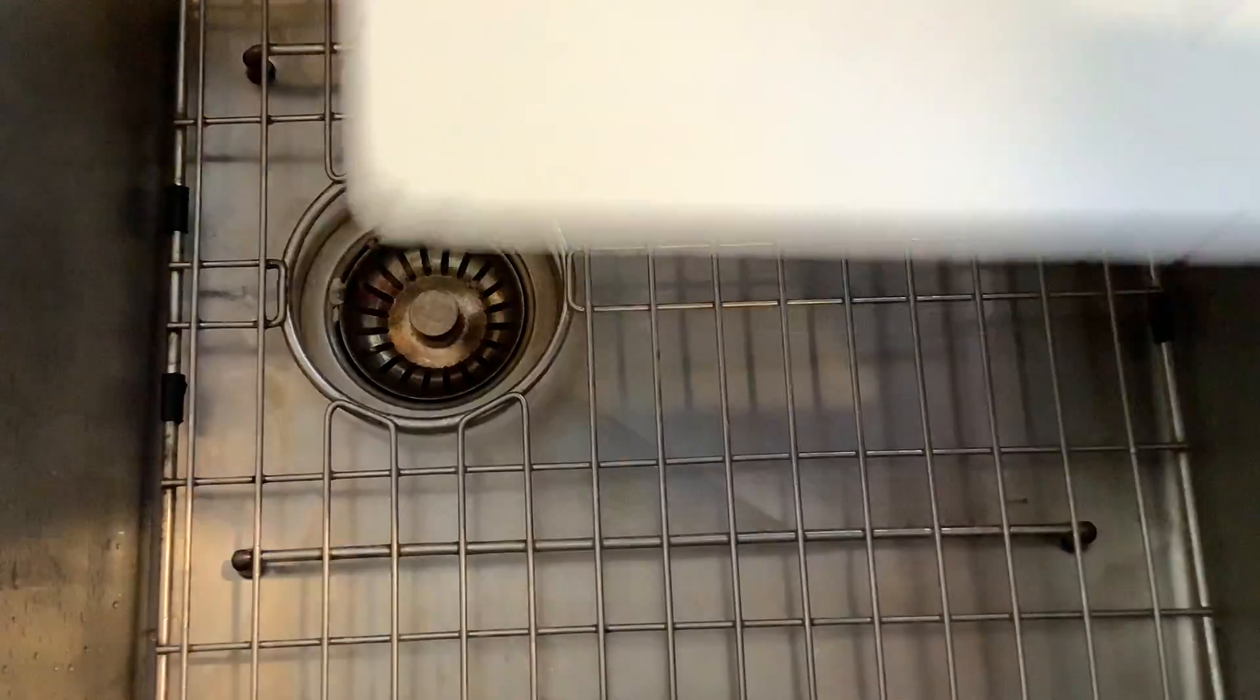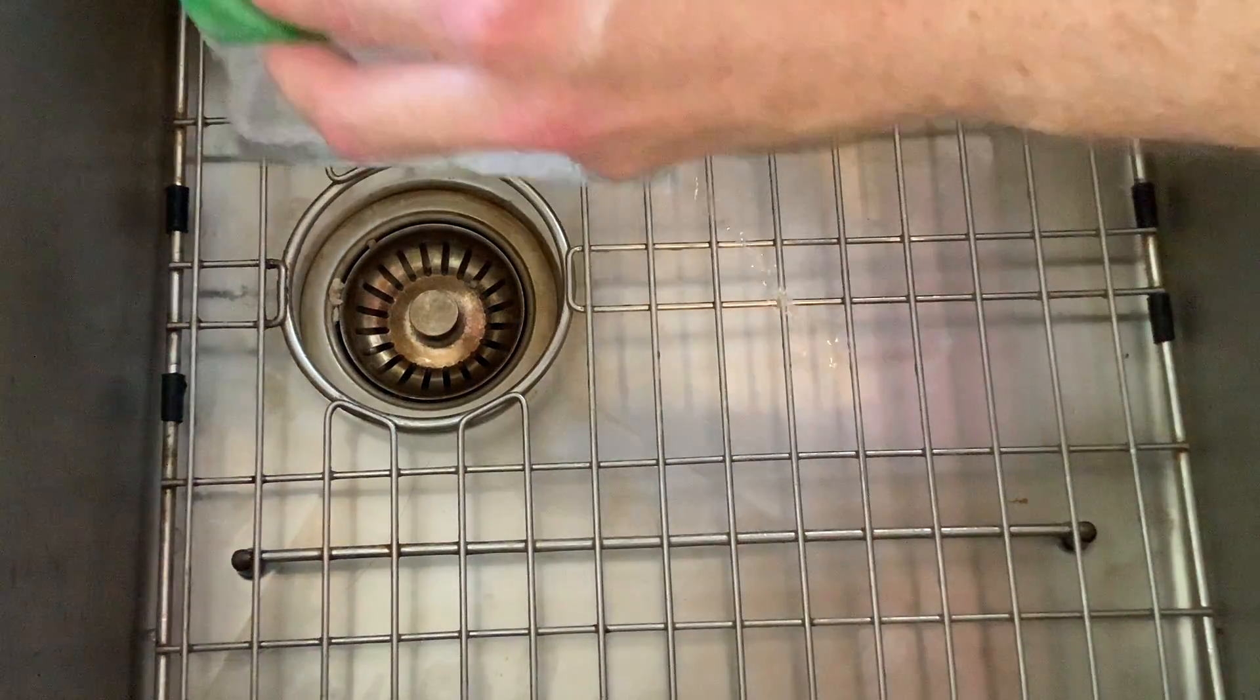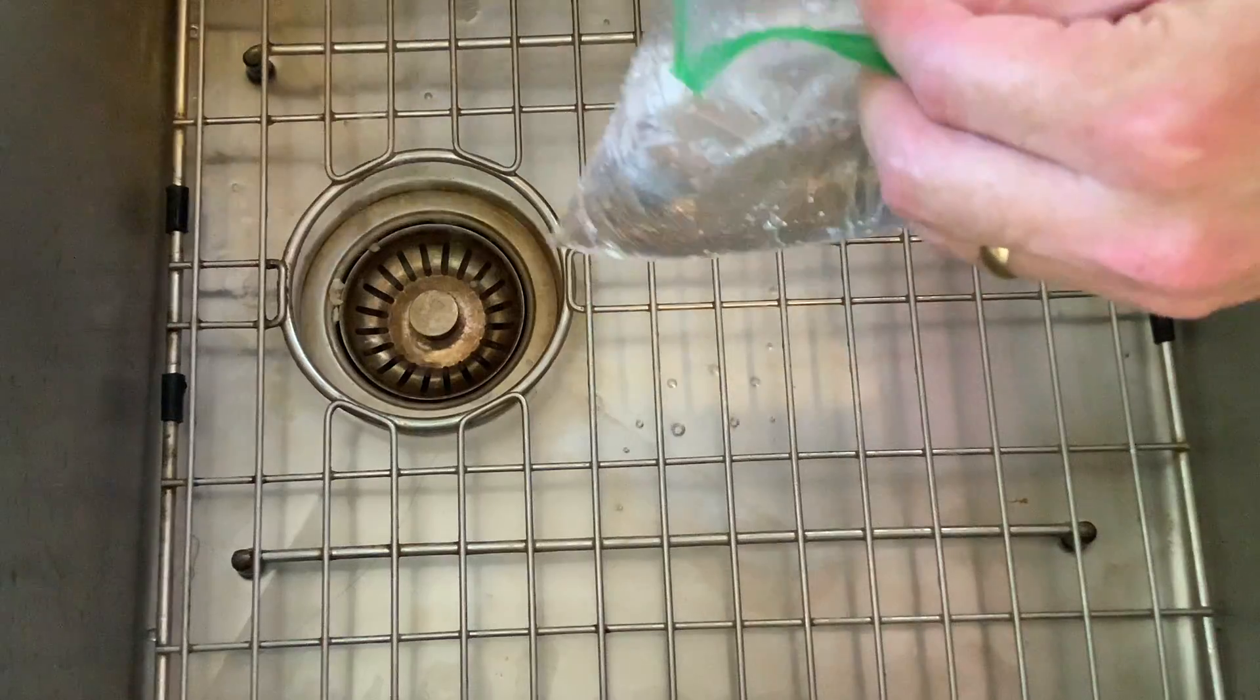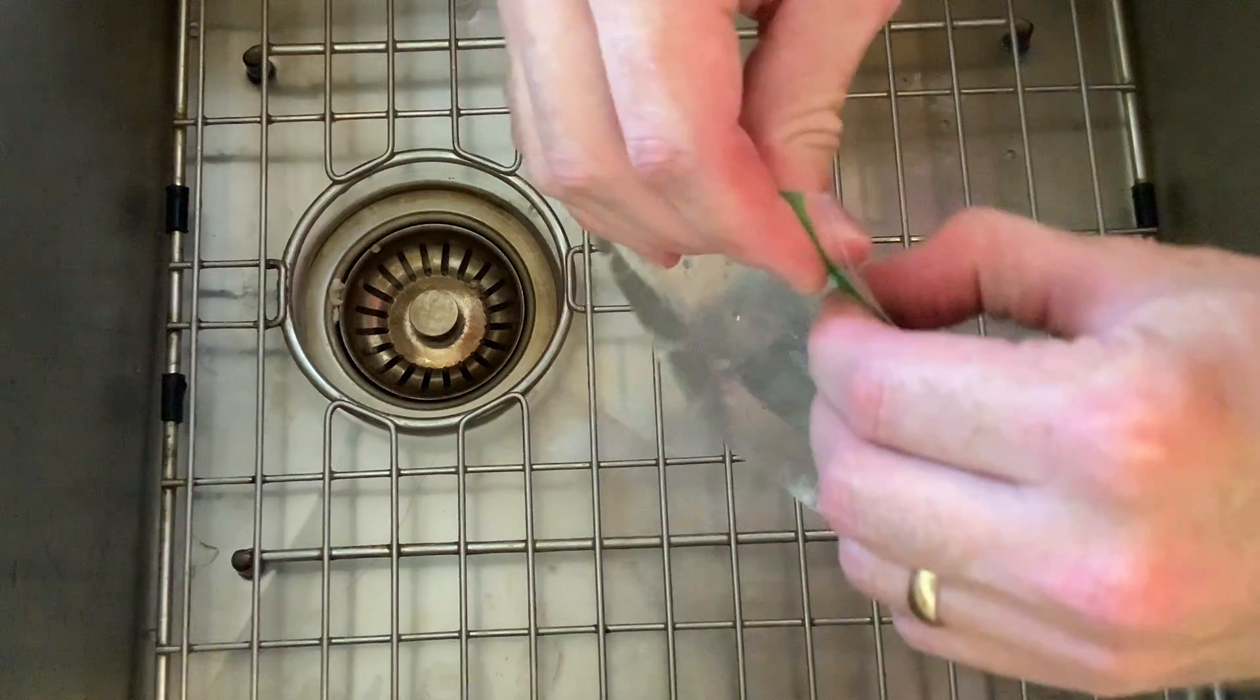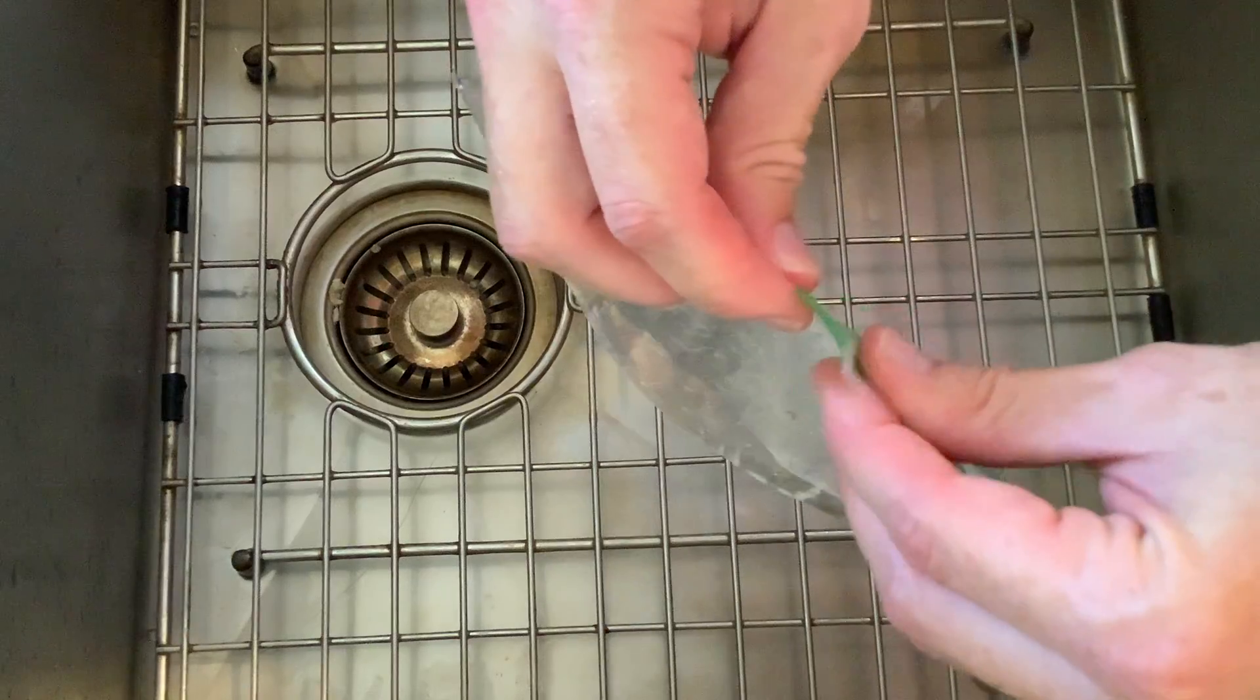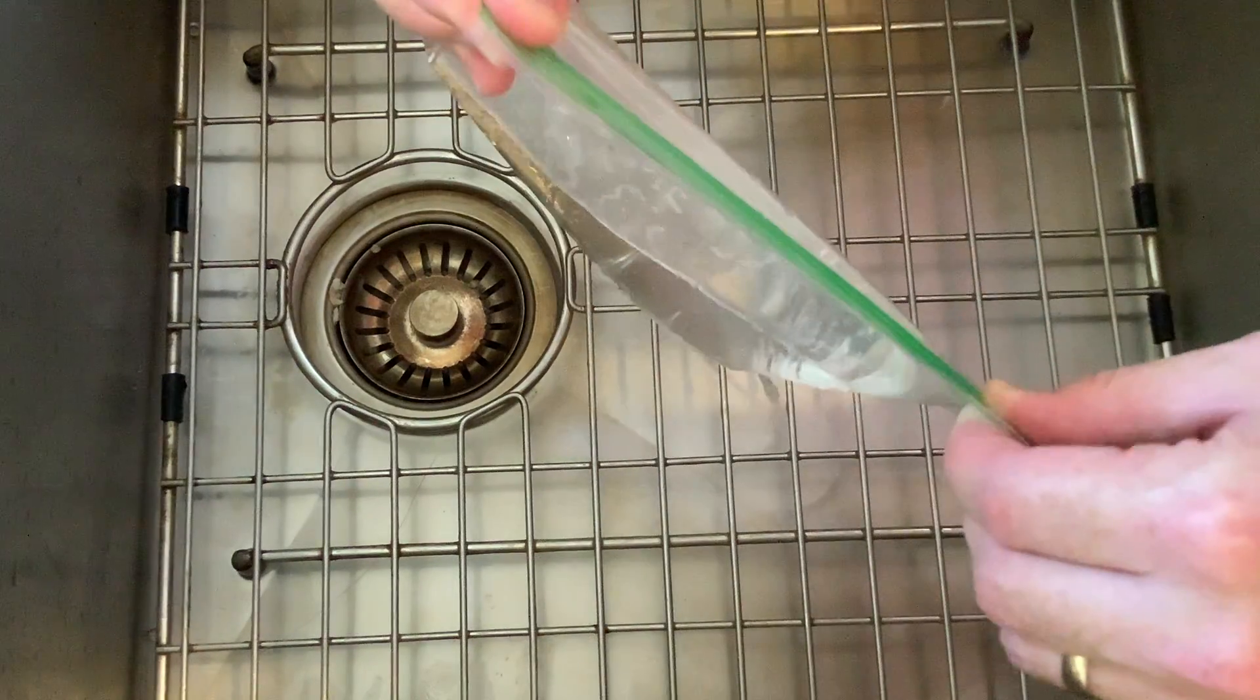First activity, you're going to do, you're going to start off the same way. Fill up your bag with water again. This is our ventricle filling with blood. Seal it just like before. Why this bag doesn't want to seal. There we go, okay.